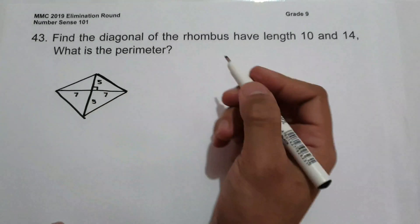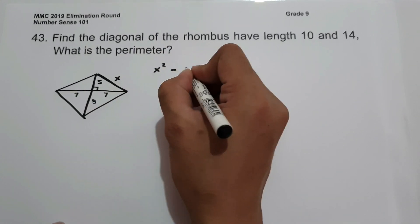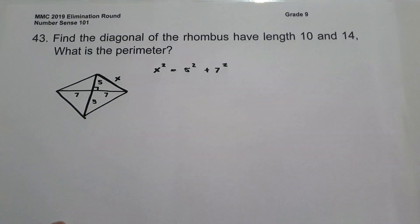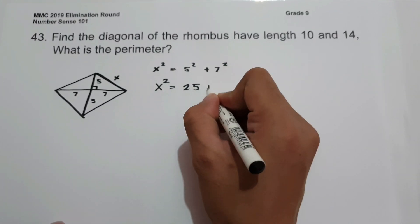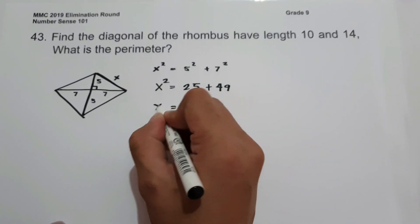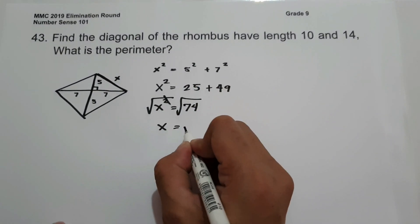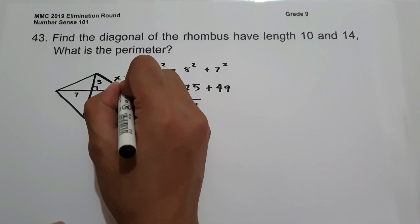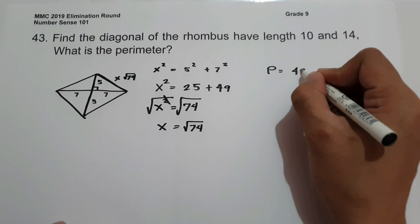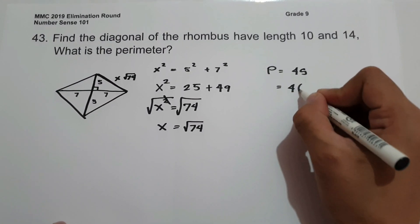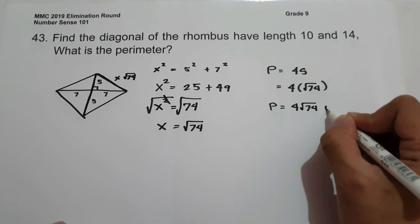To find the measure of the side, let us use the Pythagorean theorem. Representing the side as x, we have x squared equals 5 squared plus 7 squared. Simplifying: x squared equals 25 plus 49, which equals 74. Taking the square root of both sides, x equals the square root of 74. Since we are looking for the perimeter, the perimeter of a rhombus is 4 times the side, so the perimeter is 4 times the square root of 74 units.